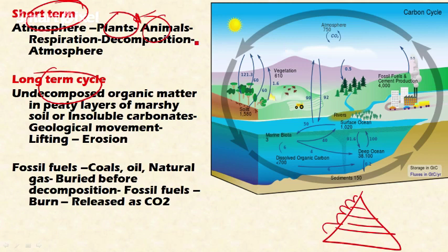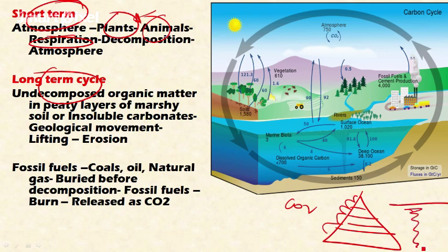Carbon moves up the trophic levels as discussed in energy flow. Carbon also moves from one living being to another, and is returned to the atmosphere through respiration — all living beings respire and contribute carbon dioxide to the atmosphere. After death, dead and decayed plant and animal matter contributes carbon to the soil. This soil organic carbon is again utilized by living plants for growth and development, and the cycle continues — this is called the short-term cycle.